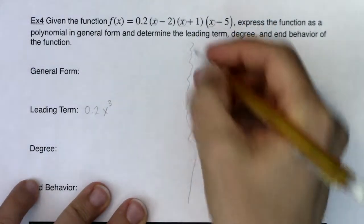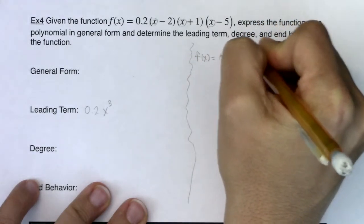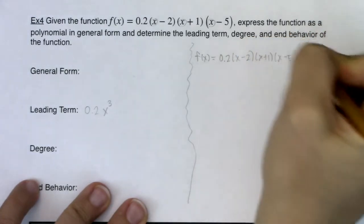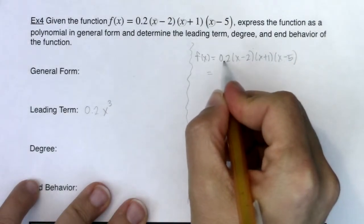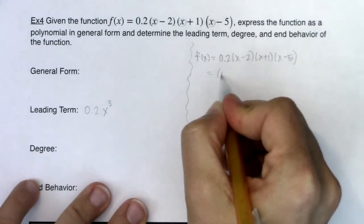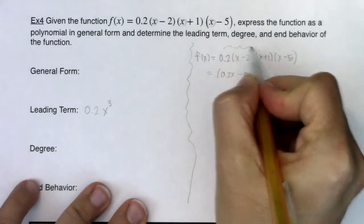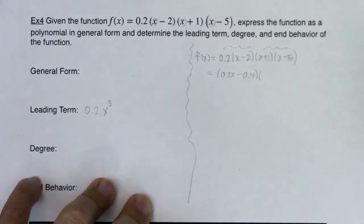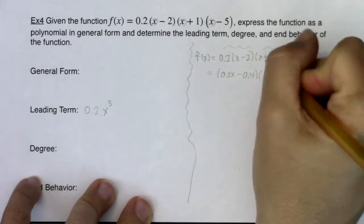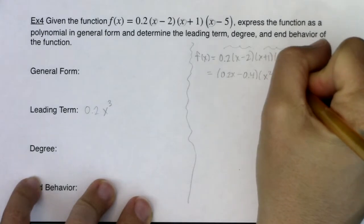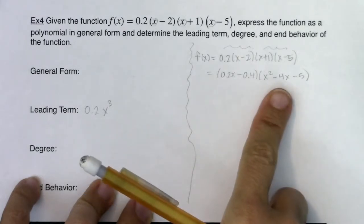Let's start distributing. I'm going to multiply these two terms together and these two terms together. Distributing the 0.2 to x and 2, I'll have 0.2x minus 0.4. Then multiplying (x minus 5)(x plus 1), I get x squared, outer minus 5x, inner plus x, so x squared minus 4x minus 5.